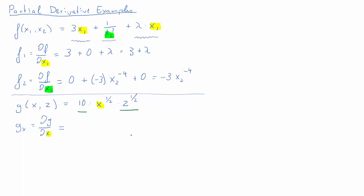These terms underlined in green are all constant factors to our variable x, so we just write them down as we would with any factor. So it's 10 times z to the half, and now we need to find the derivative of x to the half, which is a half times x to the negative half. We can simplify: 10 times a half is 5, and then we have z to the half times x to the negative half, which gives us 5 times the square root of z over x.